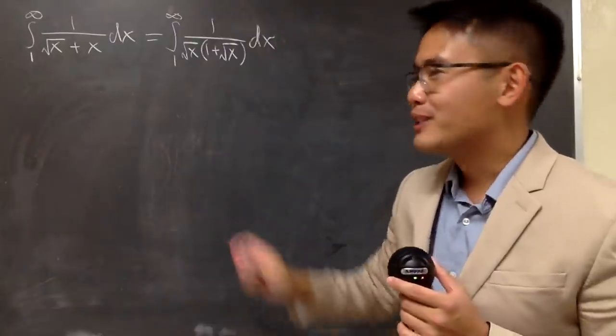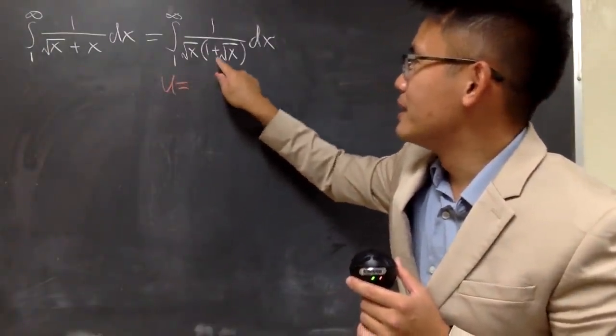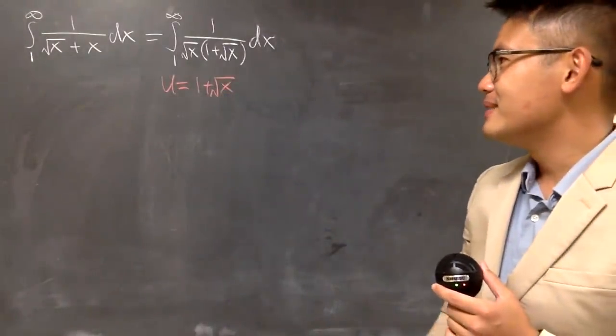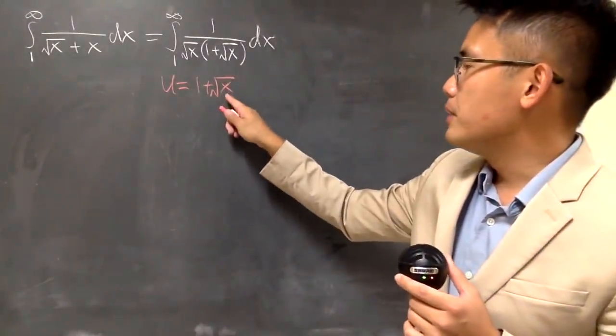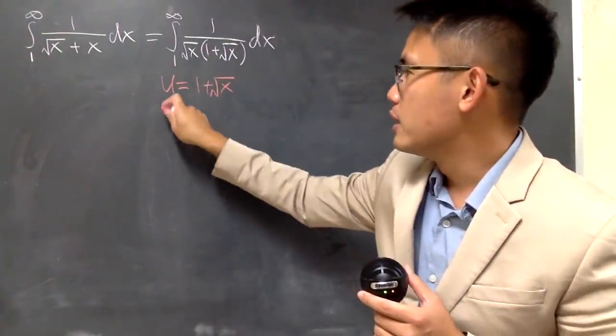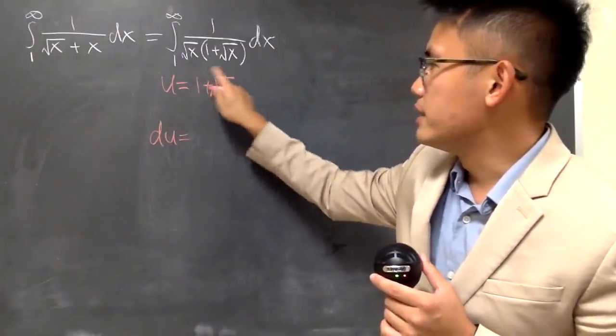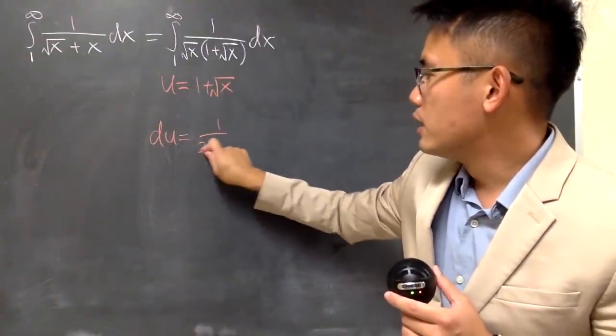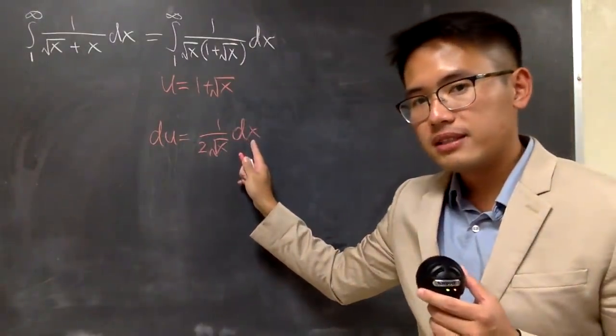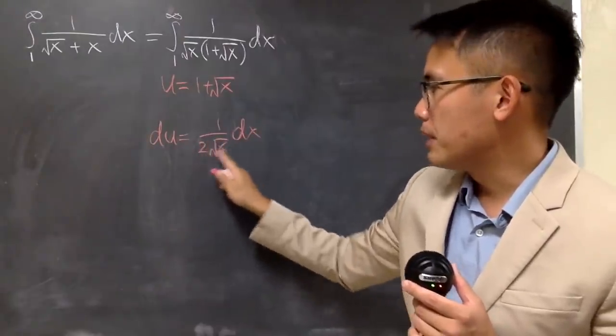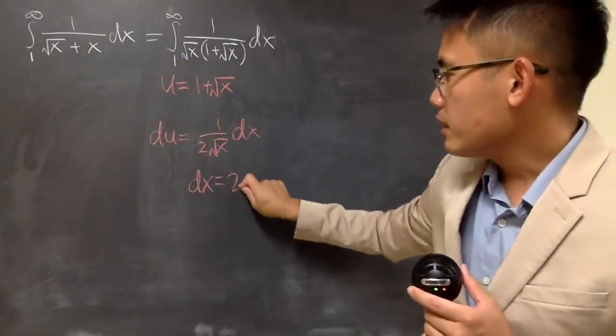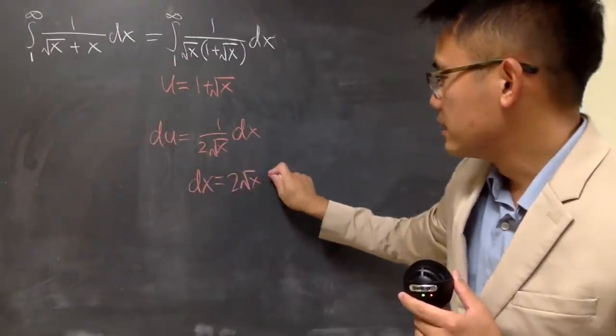And from here, I will actually let u equal this, 1 plus square root of x. You can just do a few things. Maybe you can subtract 1 from both sides, but I will just differentiate this right here. This is going to be du equal the derivative of this, which is 1 over 2 square root of x dx. And I want to isolate the dx. I can do that by multiplying both sides by this. So, we see dx equals 2 square root of x times du.